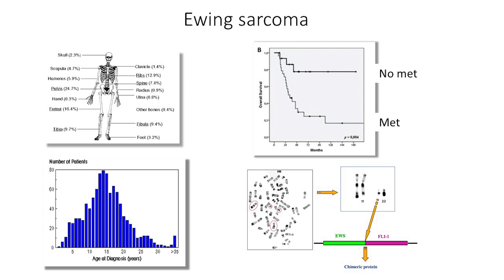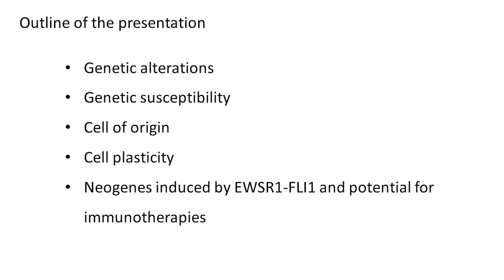This is a tumor characterized by a chromosome translocation, which was initially identified by two French scientists, Alain Aurias and Claude Turcairelle. I had the privilege to characterize this translocation 30 years ago and show that it involves two genes: EWS, also called EWSR1, and FLI1 and its family members.